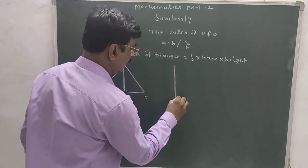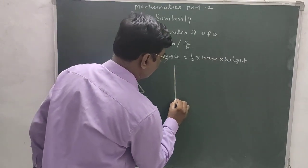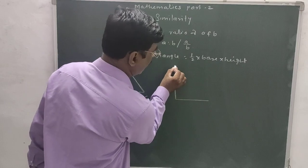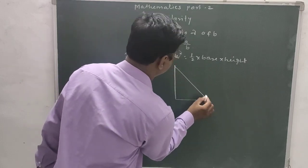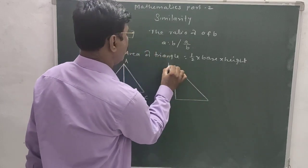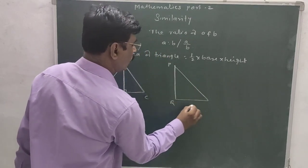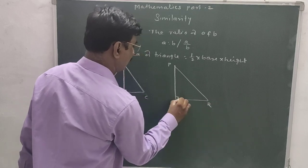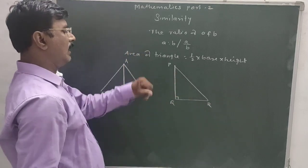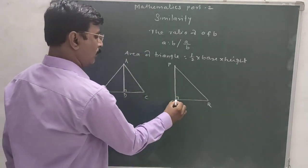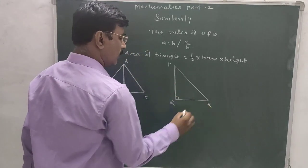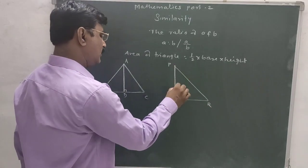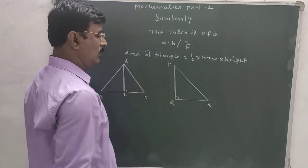In a right angle triangle PQR, where the right angle is at Q, the base is QR and the height is PQ.